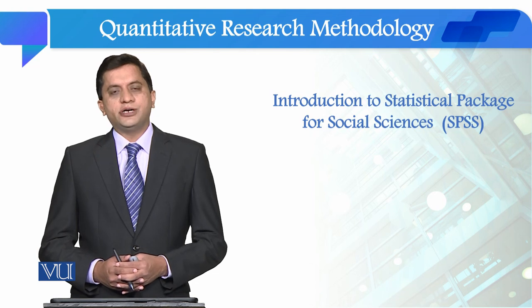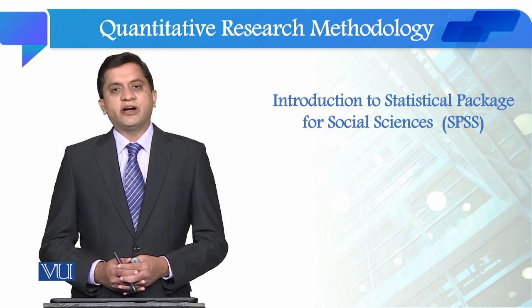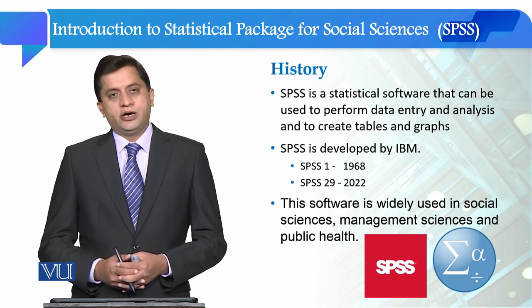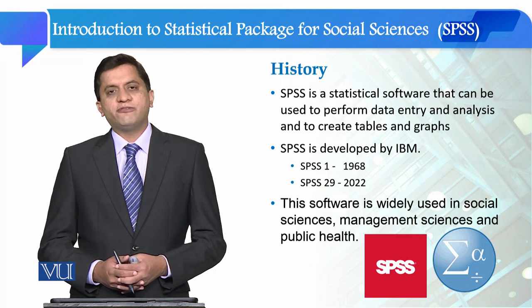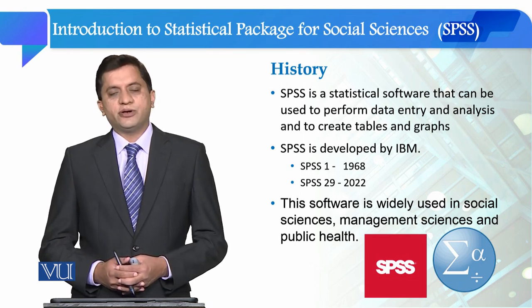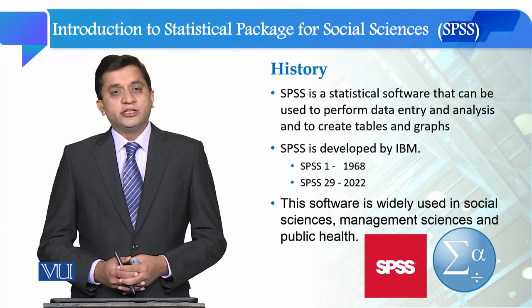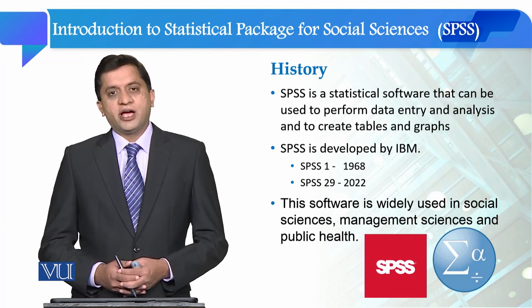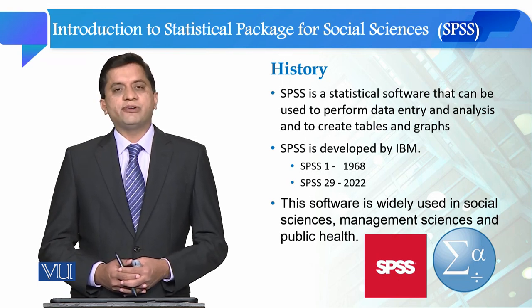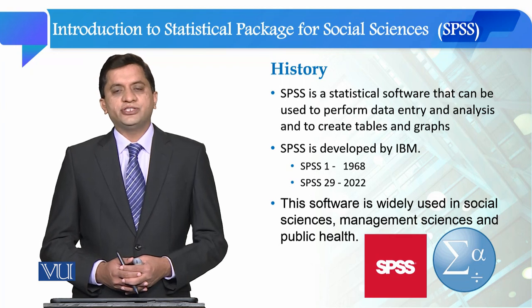In this course, we are going to learn Statistical Package for Social Sciences for this purpose. Statistical Package for Social Sciences, which is also called SPSS, is a widely used software. SPSS is a kind of software that enables the researcher to enter the data or export the data in the software, and this provides the opportunity to the researcher to analyze the data in a descriptive form and in an inferential form as well. This software is actually developed by IBM Corporation and the first version was introduced in 1968. The latest version is SPSS 29, which was released in 2022.